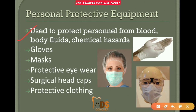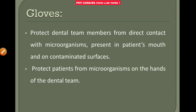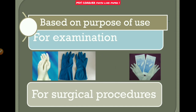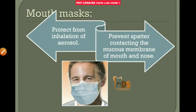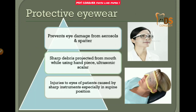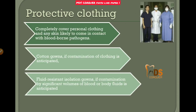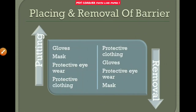Personal protective equipment (PPE) is used to protect from blood and body fluids. Gloves are used for examination and surgical procedures. Mouth masks prevent inhalation of aerosols. Protective eyewear prevents eye damage from aerosols and spatter. Protective clothing completely covers personal clothing and skin to prevent contact with bloodborne pathogens.